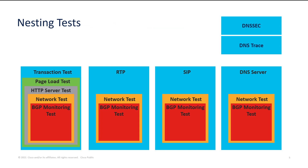A great feature is the ability to nest tests — many tests encompass other tests, negating the need to run multiple separate tests. For example, scheduling a transaction test also covers page load, HTTP server, network, and BGP monitoring tests. All results from each of those nested tests are correlated, which accelerates analysis of events and shows how different layers are functioning together.